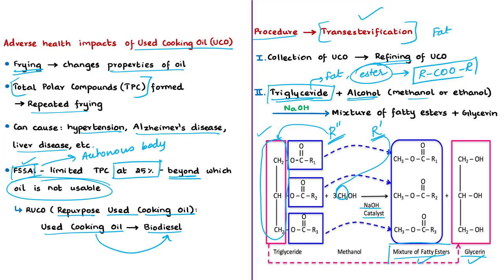The news article says that Zomato and the biodiesel manufacturer are aiming to collect one thousand tons of used cooking oil per month and convert it into biodiesel. This initiative is believed to help solve the long-standing problem of disposing of used cooking oil.